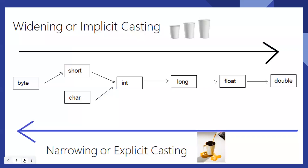For example, we have different data types like byte, short, integer, long, float, and double. From left to right, byte will have only one byte of memory, whereas short will have two, integer will have four, and long will have eight and so on. The more you go to the right, the more memory, more precision, and greater range you will have.